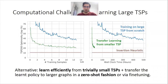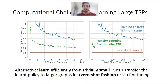In our work, what we're trying to do is really highlight to the community this computational challenge of doing end-to-end learning for these combinatorial problems, especially when we tackle some large-scale, realistic problems. We take the example of learning large-scale TSP. Our message is that training large-scale TSP from scratch is extremely inefficient today.